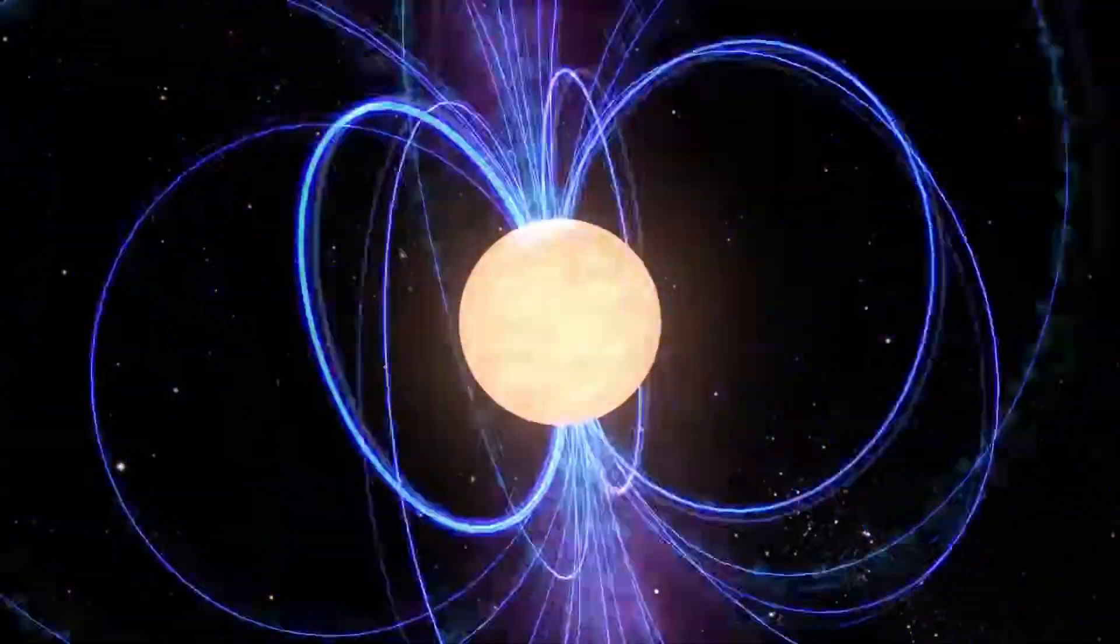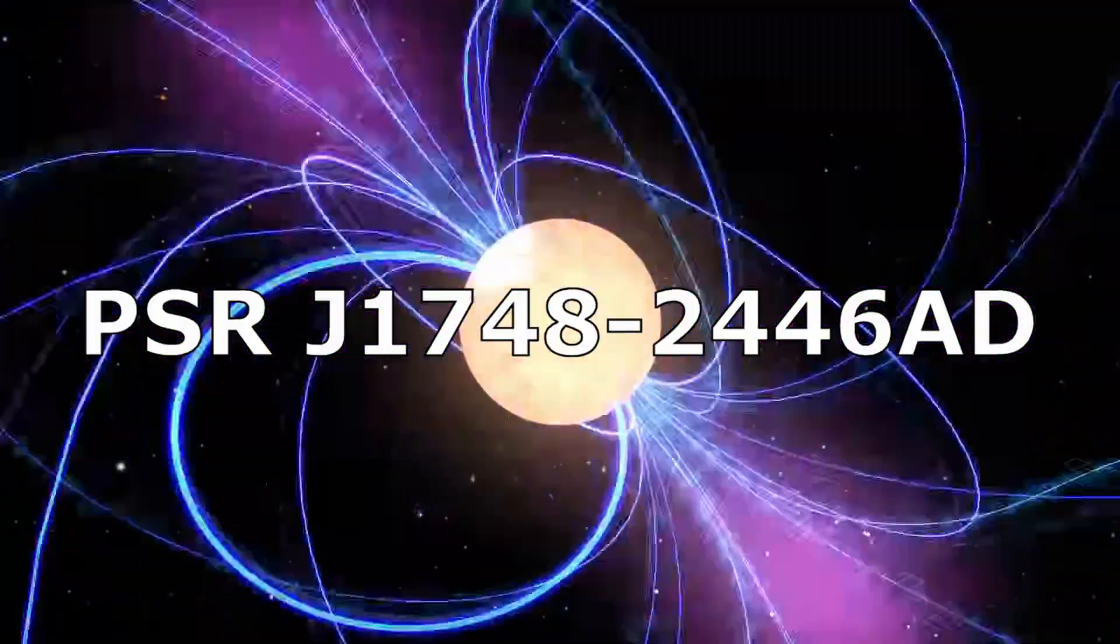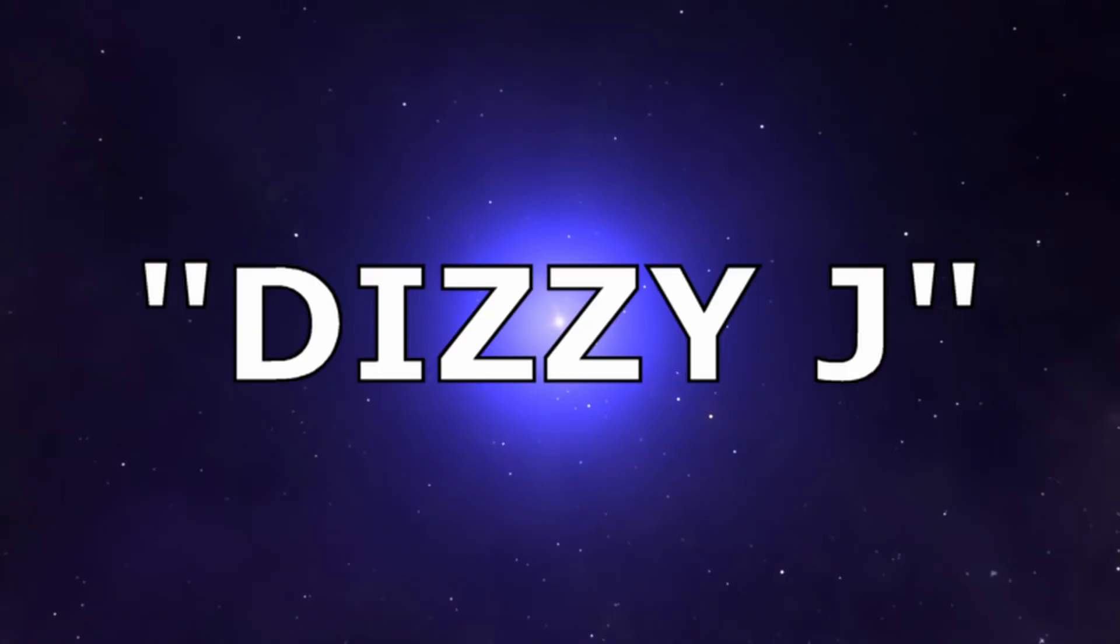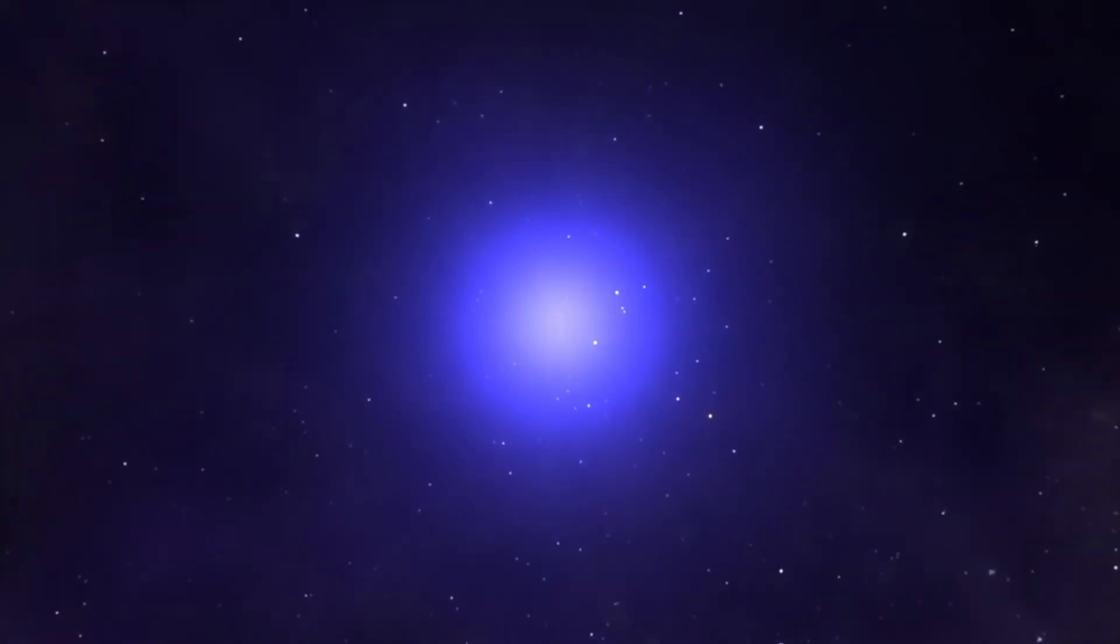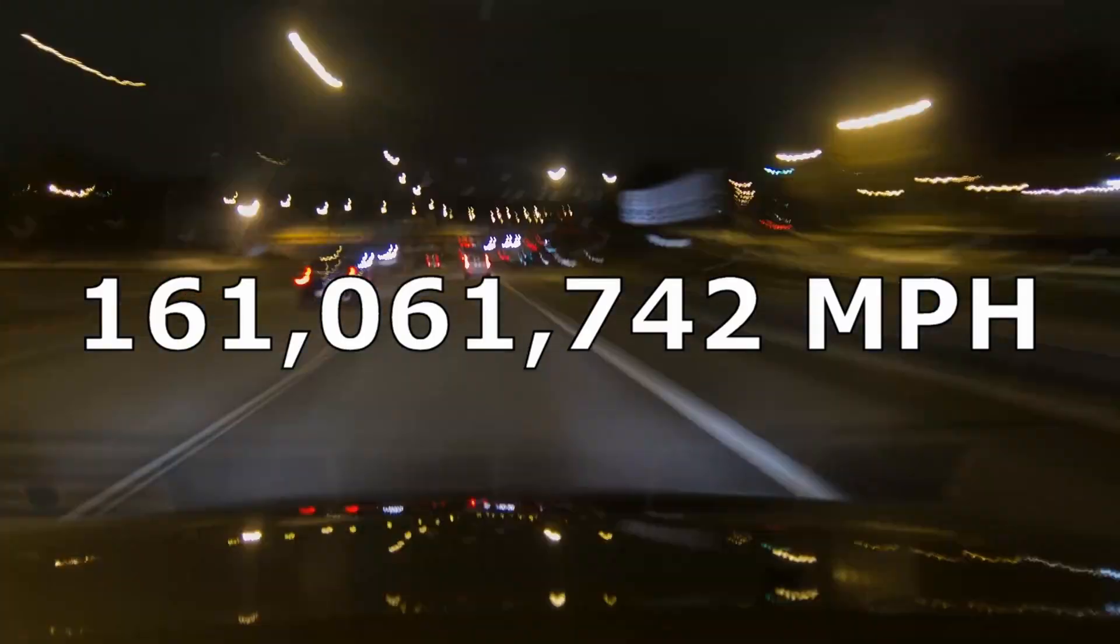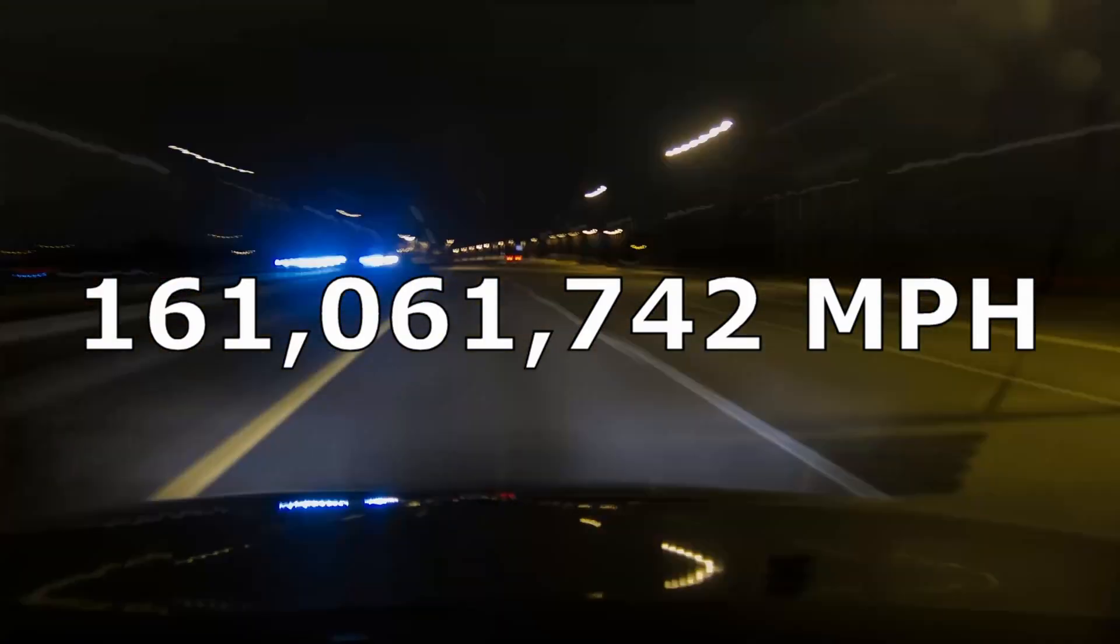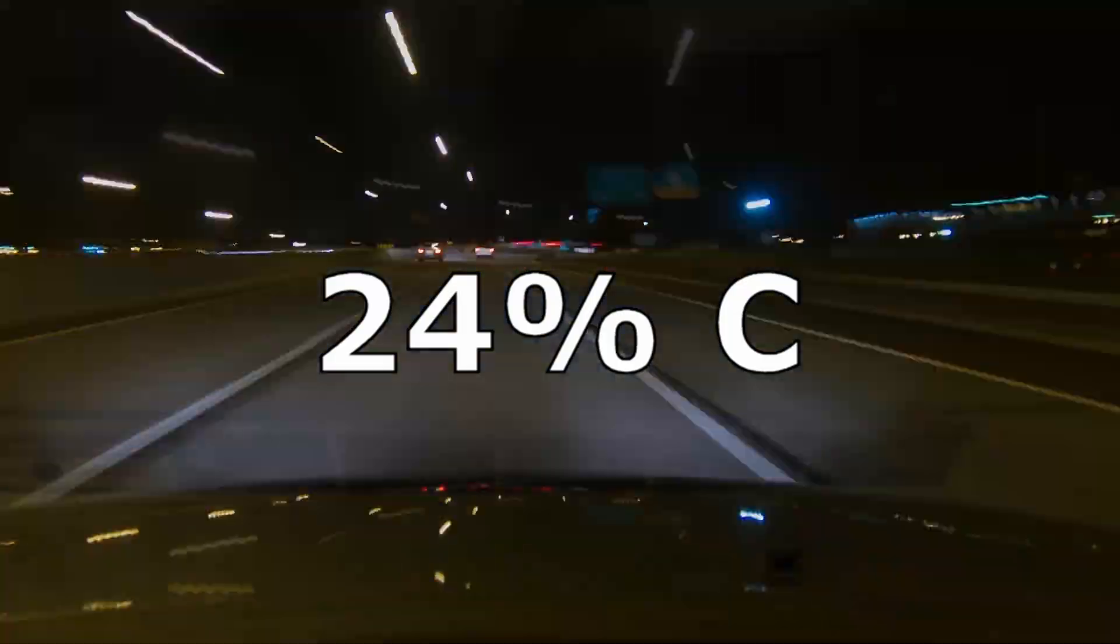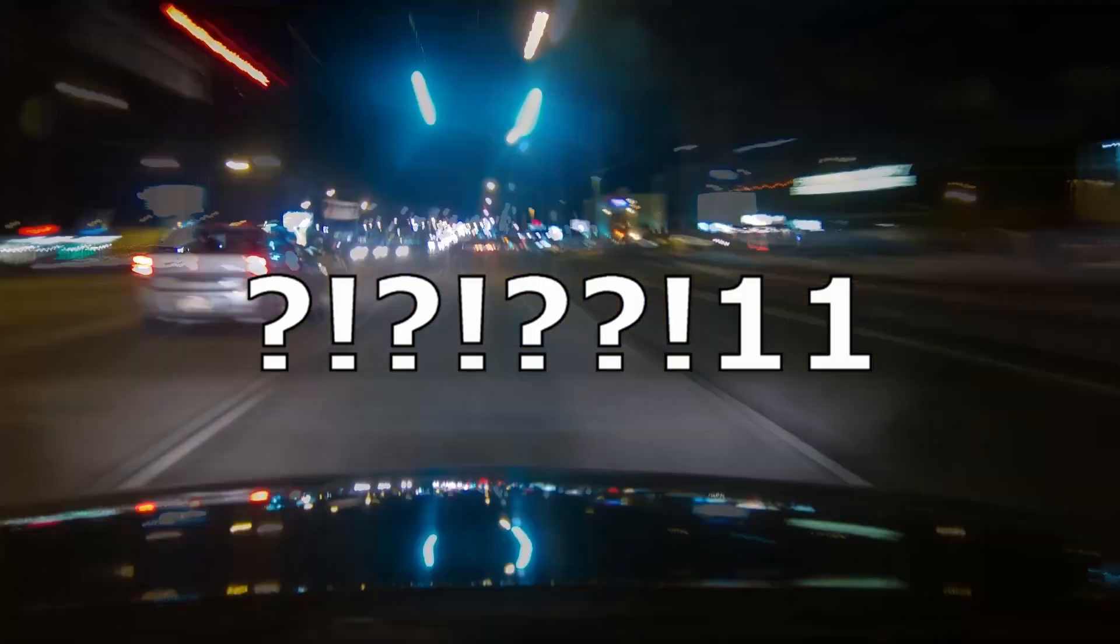The fastest known neutron star is PSR J1748-2446AD, which I like to call Dizzy J for short. Dizzy J spins a staggering 716 times per second, which is 161,061,742 miles per hour, or 24% the speed of light. Needless to say, Dizzy J is pretty dizzy.